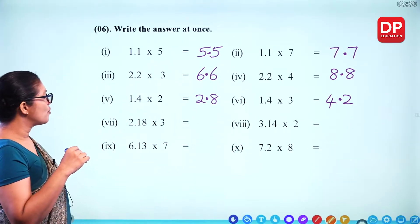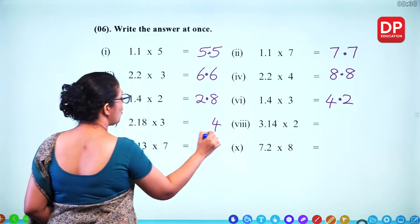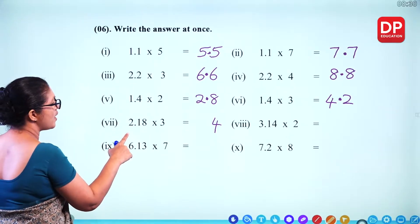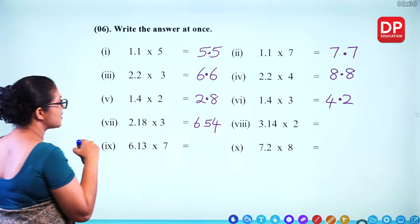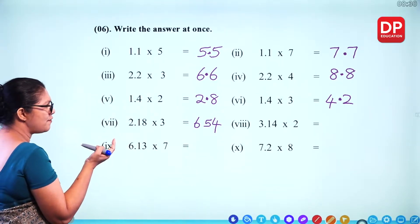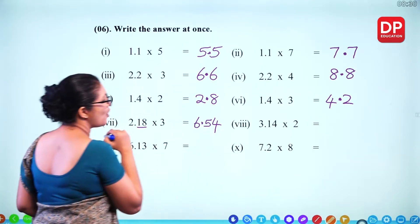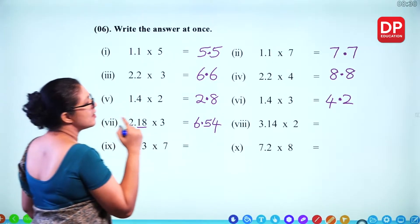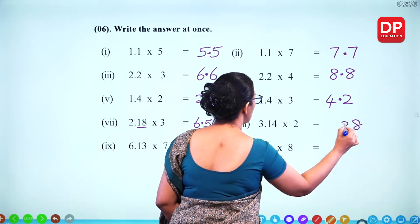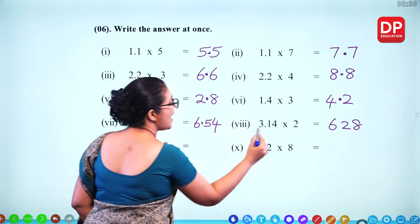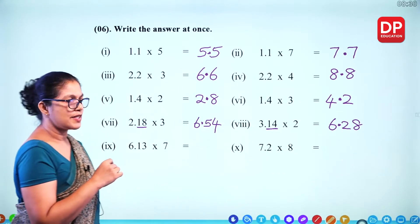For 2.18 times 3: ignore the decimal, 218 times 3 — 3 times 8 is 24 (2 remaining), 3 times 1 is 3 plus 2 is 5, 3 times 2 is 6 — giving 654. There are 2 decimal places, so the decimal point goes here: the answer is 6.54. For 3.14 times 2: 314 times 2 — 2 times 4 is 8, 2 times 1 is 2, 2 times 3 is 6 — giving 628. With 2 decimal places, the answer is 6.28.